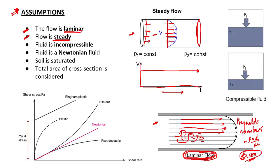Next assumption is that the fluid is incompressible. Incompressible means the density of the fluid should not change with pressure. Third is that the fluid is a Newtonian fluid — there should be no change in the viscosity of the fluid with applied stress. On applying stress there should be no change in the fluid viscosity.